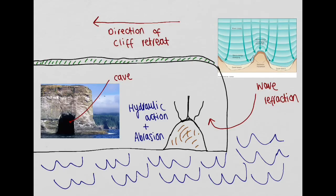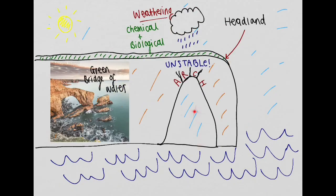Wave refraction affects all three sides of the headland, and if therefore a cave has formed on the opposite side too, erosion may cut through the cave to form an arch.